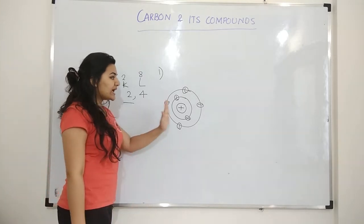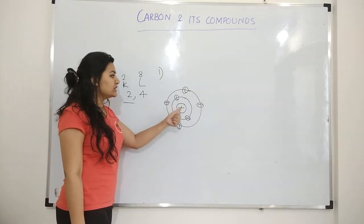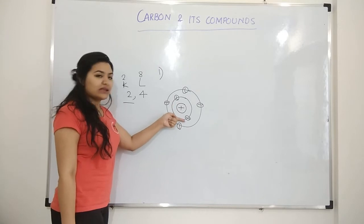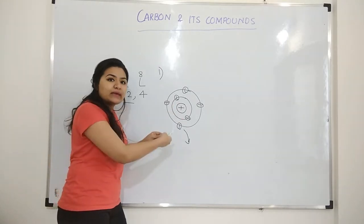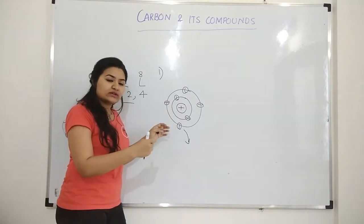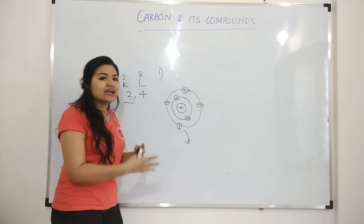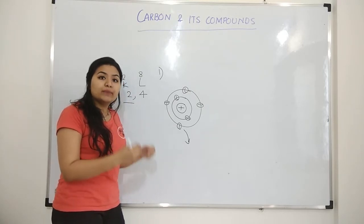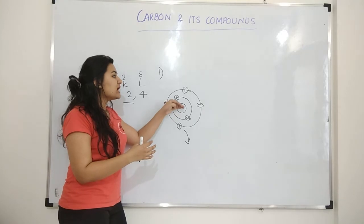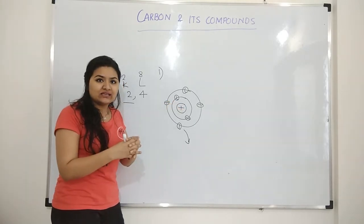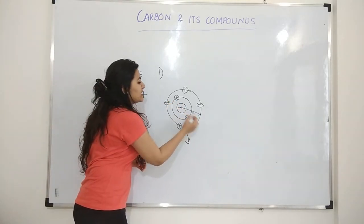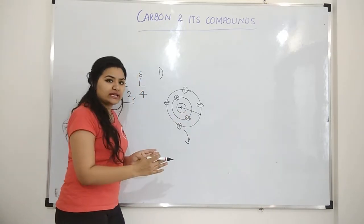Because there is a force of attraction between the nucleus and these electrons. We are putting in some energy to remove the electron. Why is there any kind of energy expenditure? Because the electrons are bound with the nucleus tightly. This distance is very less because there are only two shells.